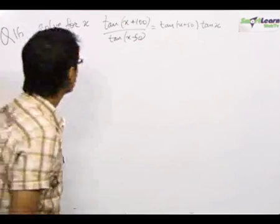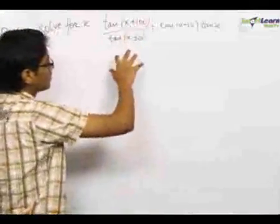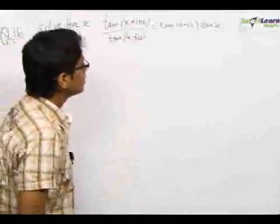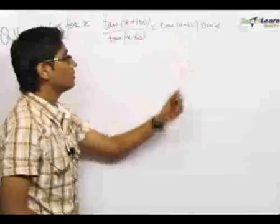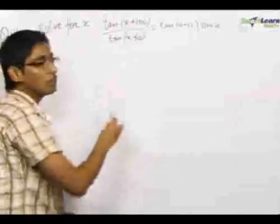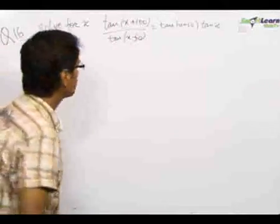In our 16th problem, we are given the equation tan(x+100) upon tan(x-50) equals tan(x+50) times tan(x), and we need to find the value of x satisfying the given equation.